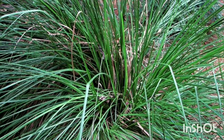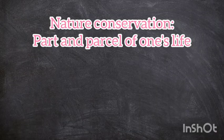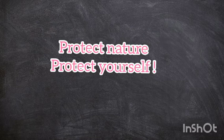Trees and bushes in hills prevent soil erosion and landslides. They grow along the river banks and protect them from collapsing.